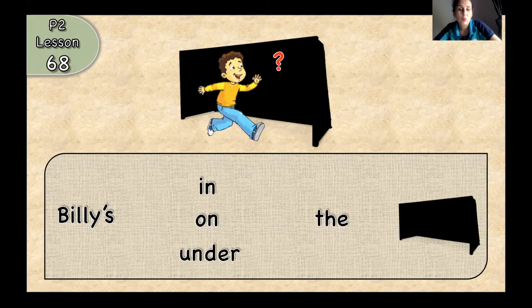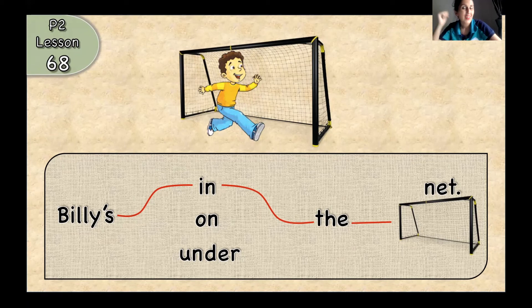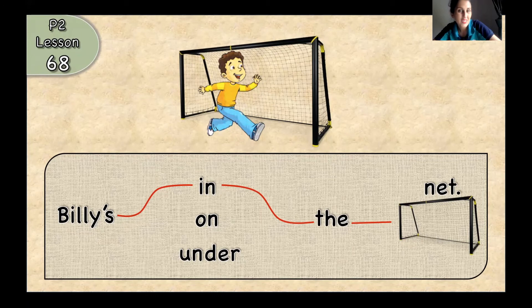So, we have to choose between our prepositions in, on, under. Billy's in there. Is it clear? Is it clear? Okay, good. Let's continue. Let's try to do another sentence.